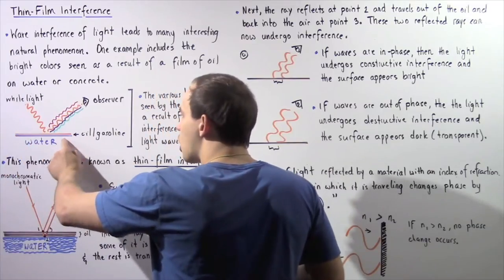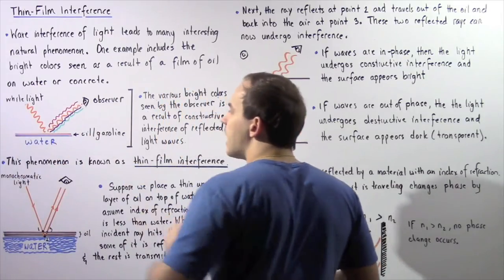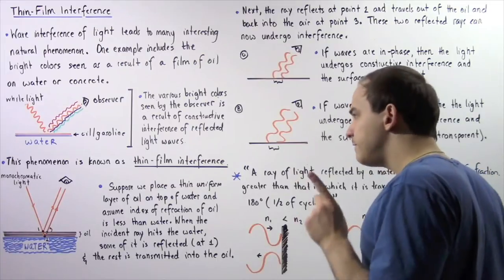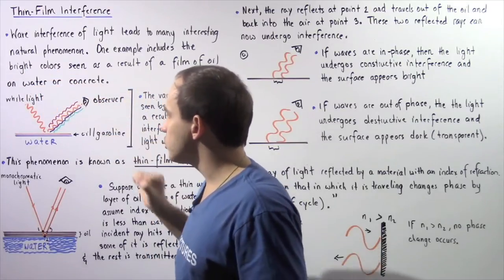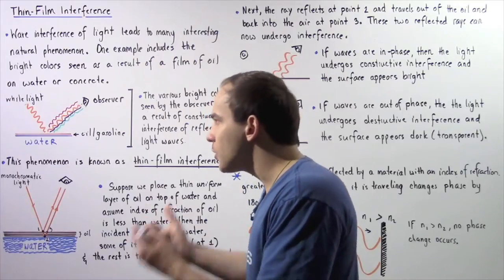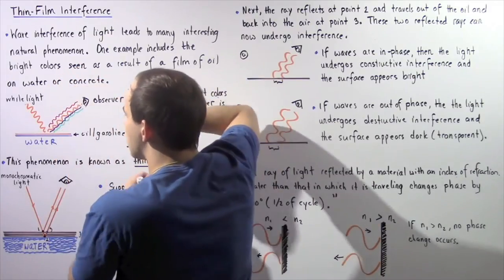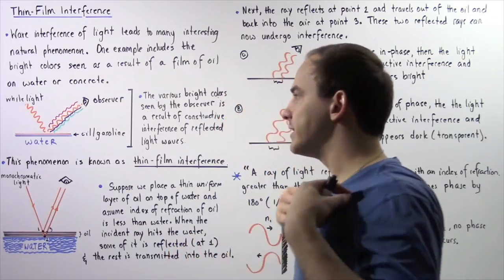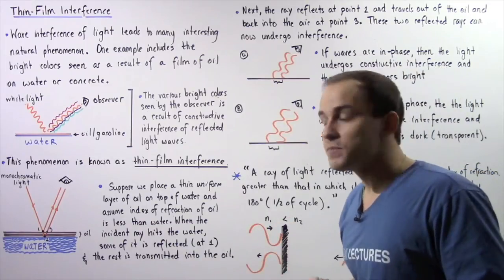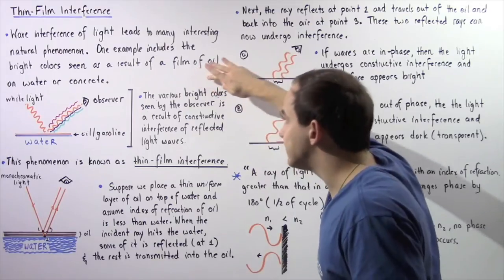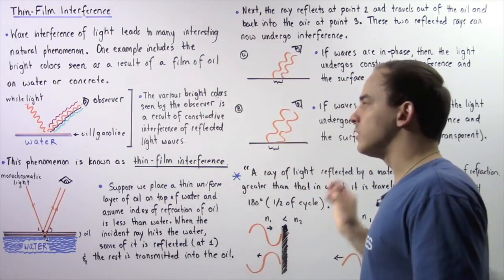Let's suppose we have water shown in blue and a thin film of oil or gasoline shown in brown found on top of the surface of water. Now, if we examine a single wave of white light that propagates through air and eventually hits the surface of oil and water, dispersion of that white light will take place and essentially all the different wavelengths of color will reflect as shown in the diagram. These waves of light will essentially interfere with one another, and the various bright colors seen by the observer are a result of the constructive interference of reflected light waves.